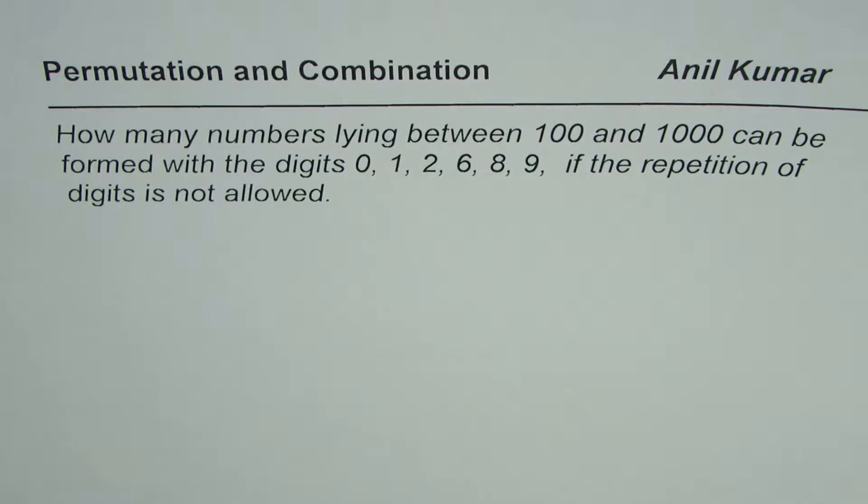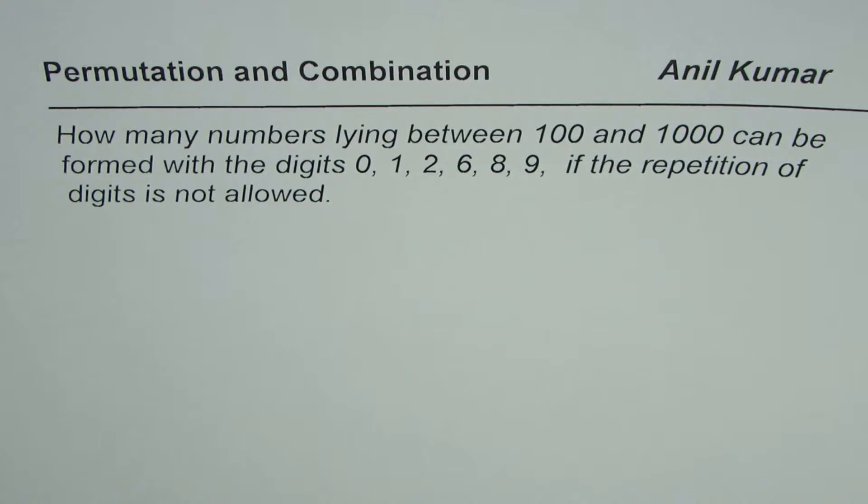I'm Anil Kumar and here is a very interesting question on permutation and combination. The question is, how many numbers lying between 100 and 1000 can be formed with the digits 0, 1, 2, 6, 8, 9, if the repetition of digits is not allowed?